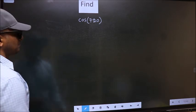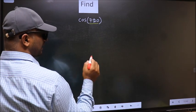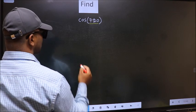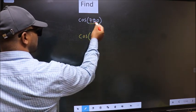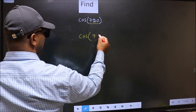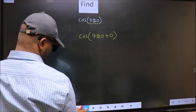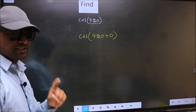See, here we have 720 and 720 is a multiple of 180. So what we should do is cos, in place of 720 now we should write 720 plus 0. This is your step 1.